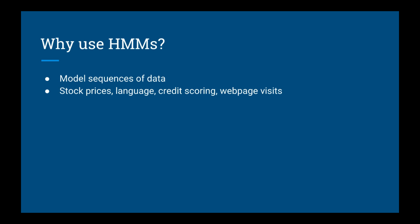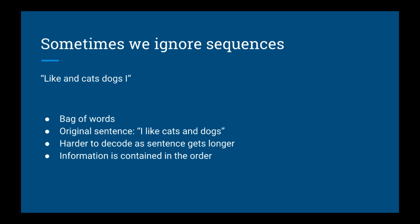Sequences appear everywhere: stock prices, language, credit scoring, and webpage visits. A lot of the time, we're dealing with sequences in machine learning and we don't even realize it, or we ignore the fact that the data came from a sequence.